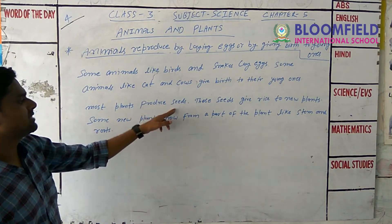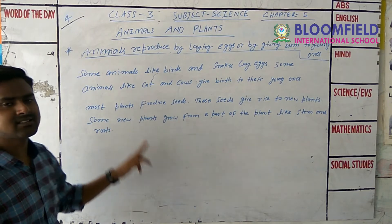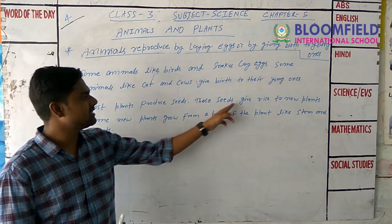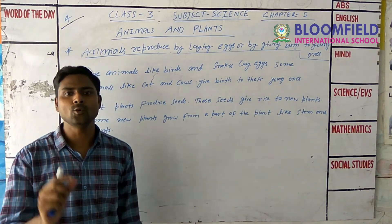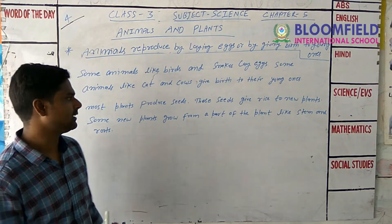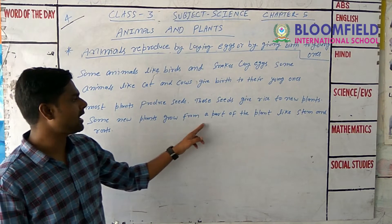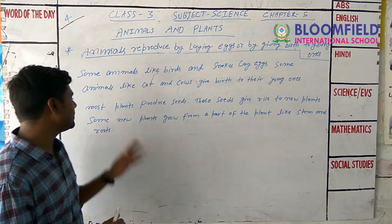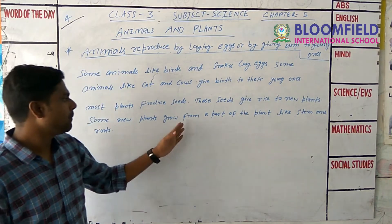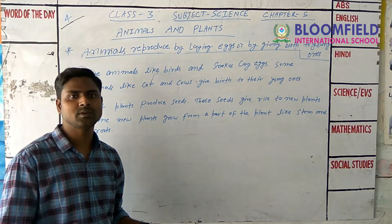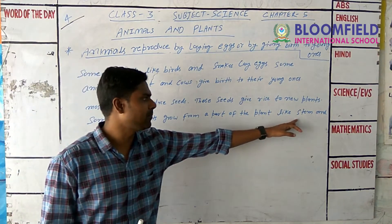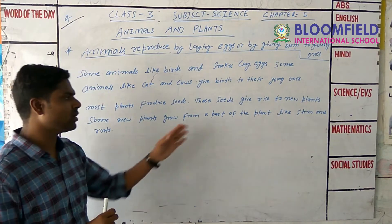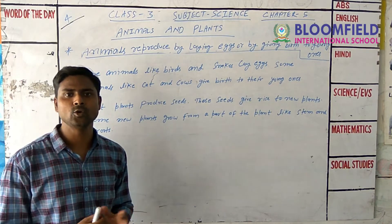Most plants reproduce by seeds. These seeds give rise to new plants. Some new plants also grow from parts of the plant like stem and roots. So seeds reproduce into new plants, and stem and roots can also produce new plants.